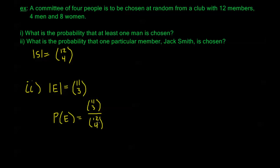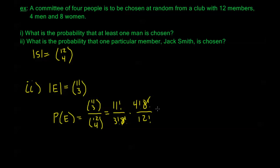So the probability of E is eleven choose three over twelve choose four. Working this out: eleven factorial over three factorial times eight factorial, times four factorial times eight factorial over twelve factorial. The eight factorials cancel, the four factorial over three factorial reduces to four on top, and eleven factorial over twelve factorial reduces to twelve on the bottom — giving four over twelve, or one third. So there's a one in three probability that Jack Smith will be on the committee. In fact, for any one of the twelve members, there's a one in three chance they'll end up on the committee.